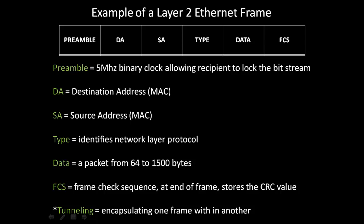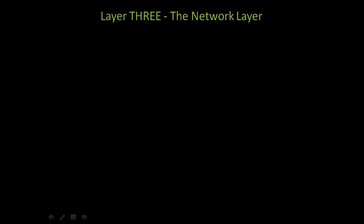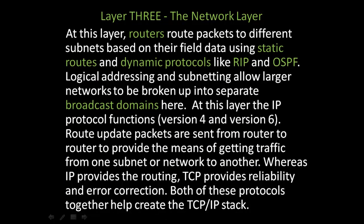Tunneling is sometimes employed when using layer 2 Ethernet frames, where one frame is encapsulated within another. Now let's examine layer 3, or the network layer. At this layer, routers route packets to different subnets based on their field data using static routes and dynamic protocols like routing information protocol and open shortest path first.